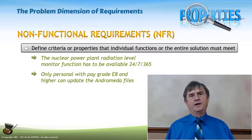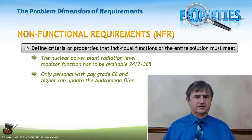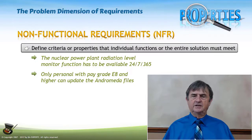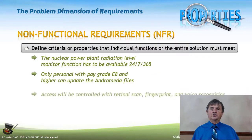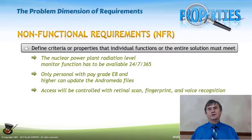Only personnel with pay grade E8 and higher can update the Andromeda files. This is a security constraint, a non-functional example. Access will be controlled with retinal scan, fingerprint, and voice recognition — very technical, listing the technologies used to identify an individual.